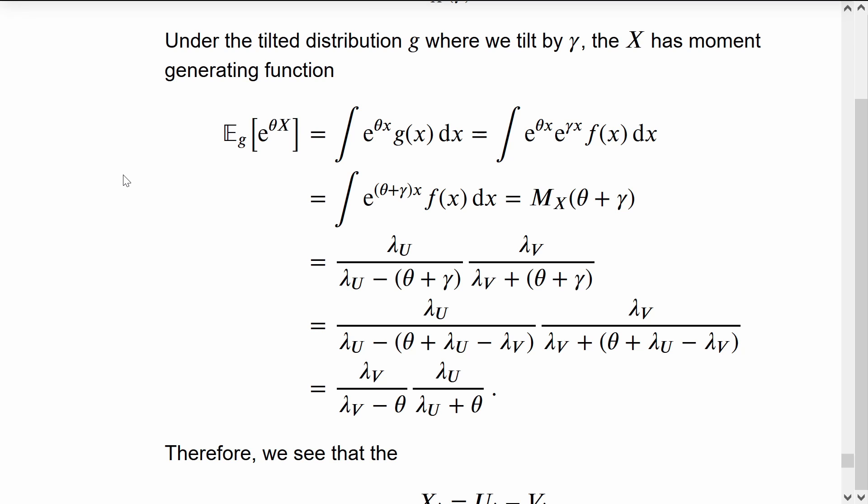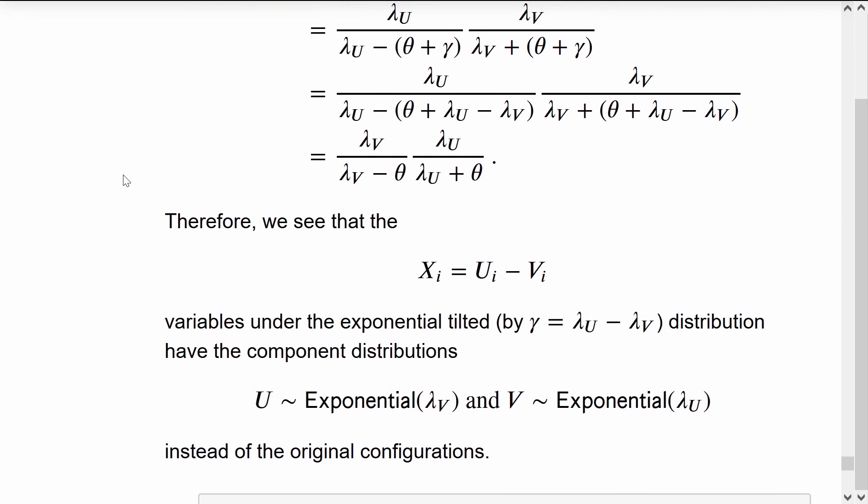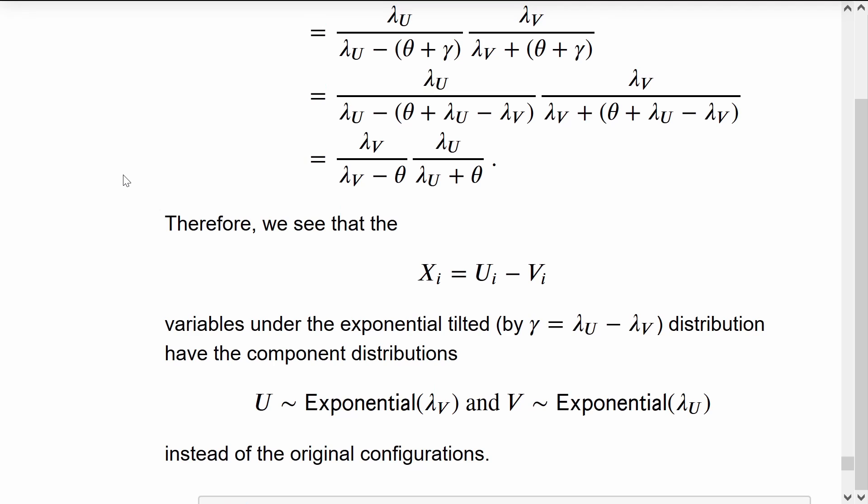Expanding this further and simplifying again, we can see that the moment generating function is the difference of exponential random variables. The same kind of distribution we started with, except the parameters are slightly different now.